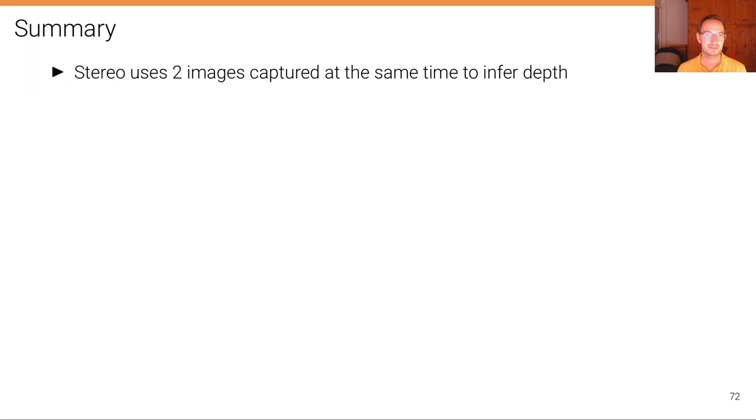We've seen that stereo uses two images captured at the same time to infer disparity or equivalently depth. And compared to other sensors, stereo vision is cheap and passive.